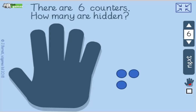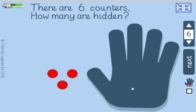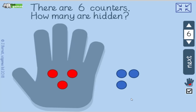Last one. There are 6 altogether. How many under the hand if you can see 3? Yeah, there are 3 under the hand — 3 there and 3 there. Double 3 is 6. Maths sentences: 3 add 3 equals 6. Can you do a subtraction? 6 take away 3 equals 3, or 6 minus 3 equals 3.